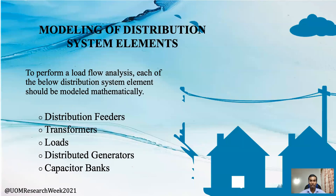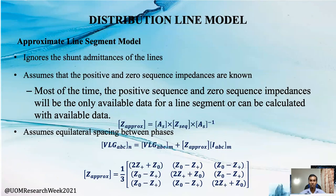Before carrying out load flow analysis, the distribution system model components should be modeled mathematically. For distribution lines, we selected the approximate line model. It performs calculations using data such as conductor diameter, length, and line spacing, ignoring shunt admittances. In practical scenarios, most of the time the available data are positive and zero sequence impedances. Considering this and the simplicity to implement in the algorithm, we selected this model.